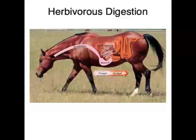This breakdown of cellulose happens via a process called fermentation. Fermentation can happen in the caecum, which is joined onto the large intestine after the stomach — these organisms are called hindgut fermenters. Alternatively, fermentation can happen before the stomach in foregut fermenters. Cows, along with other ruminants like sheep, have a fermentation chamber before the stomach called the rumen — and that is why they're called ruminants.